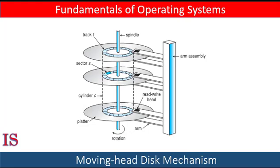A logical block address is easier for algorithms to use than a sector-cylinder-head tuple or a chip-block-page tuple. By using this mapping on a hard disk drive, we can in theory convert a logical block number into a disk access consisting of cylinder number, track number within that cylinder, and sector number within the track. There are more types of storage devices reasonable to cover in an operating system course, with different characteristics that might need different caching and scheduling algorithms to maximize performance.